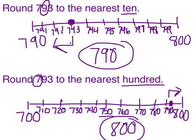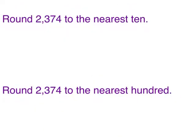So it's very important for me to see which place am I rounding to. Let's look at another example. This may seem daunting because it's a four-digit number, but we're still going to follow the same steps. Round 2374 to the nearest ten.